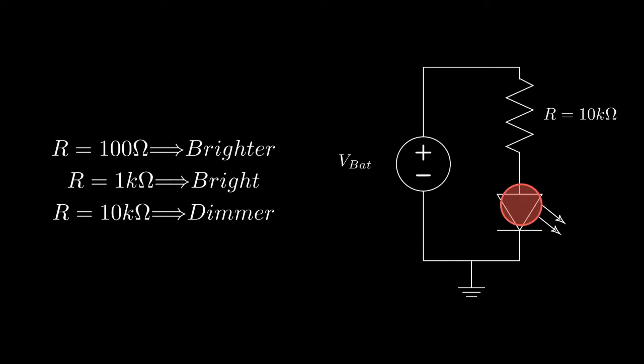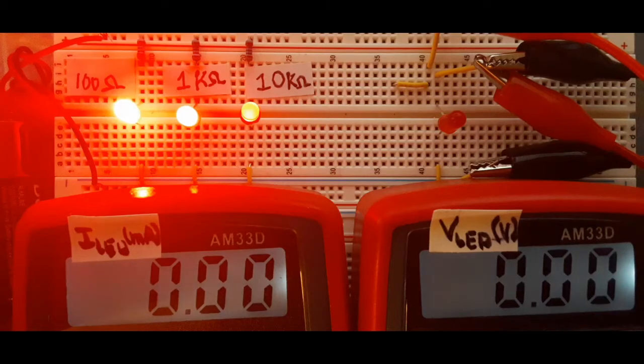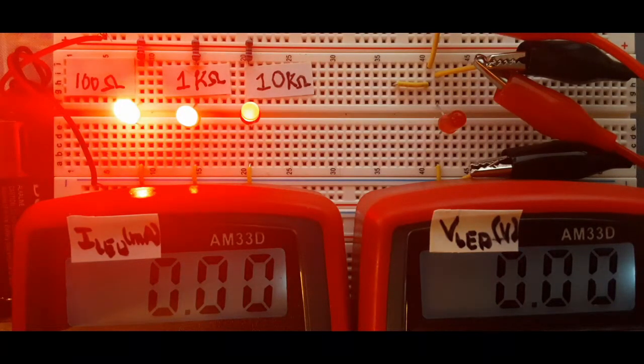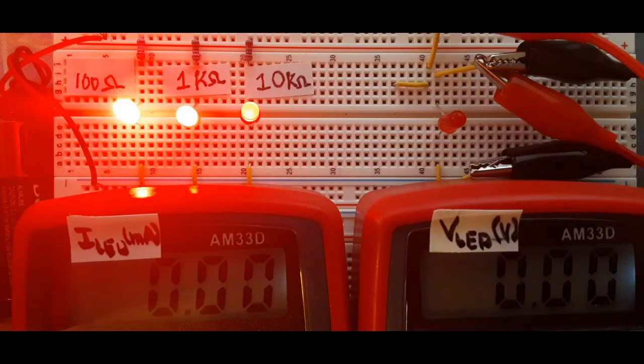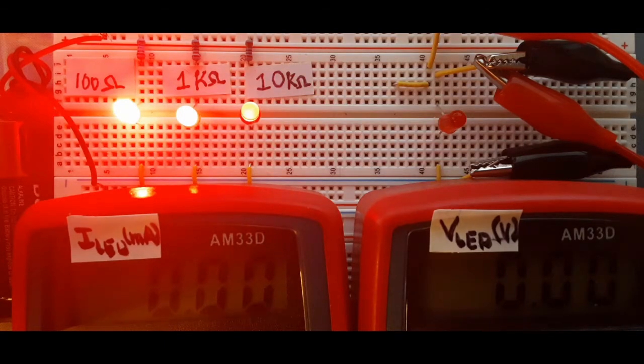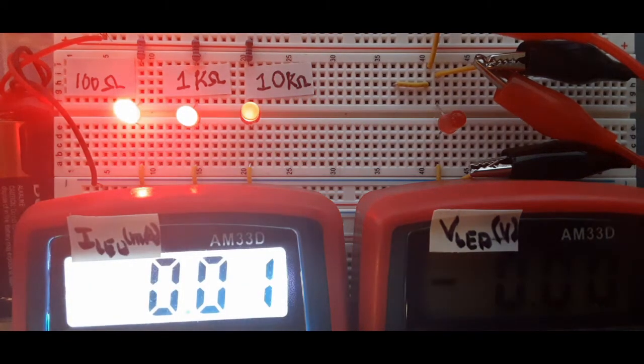Let's take a look at what this brightness actually looks like on the bench. What I've got here is a 100 ohm, 1 kilo ohm, and 10 kilo ohm resistor connected to three separate LEDs so we can see the brightness. Now the 100 ohm resistor is making that LED so much brighter than the other two that it's actually affecting the brightness of my test bench.